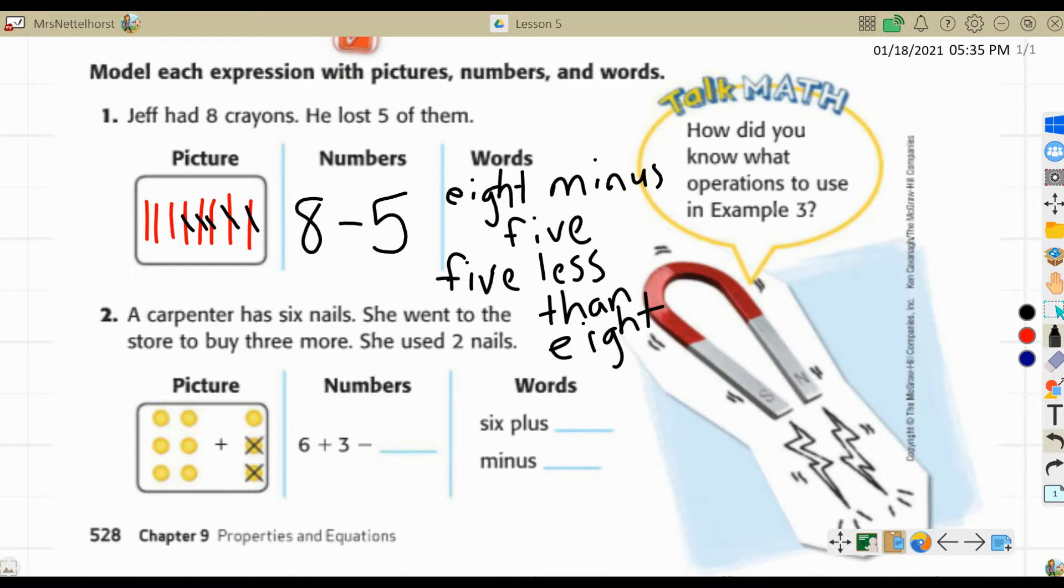Number two, a carpenter has six nails. She went to the store to buy three more. She used two nails. So they've given you a picture. She has six nails. Then she went to the store and bought three more and then she used two of them. So you've got the picture. You're going to finish writing it in numbers, and then you're going to write it in words. Pause your video. Come back after you've answered. I have six nails, bought three more, and then two went away because she used them. So that is minus two. And then I'm going to write it in words here. Six plus three minus two.